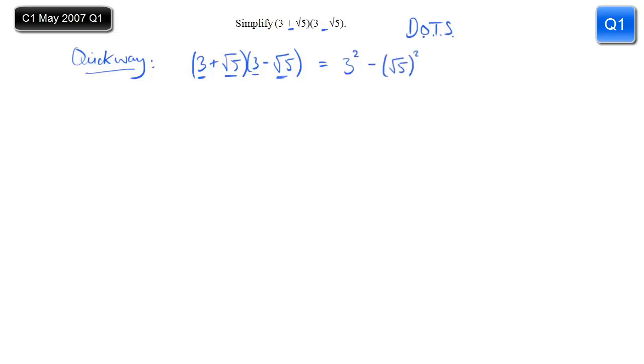This is a really useful thing for you to know and be able to do. So 3 squared is obviously 9, root 5 squared is 5, 9 minus 5 is 4. OK, that's the quick way.